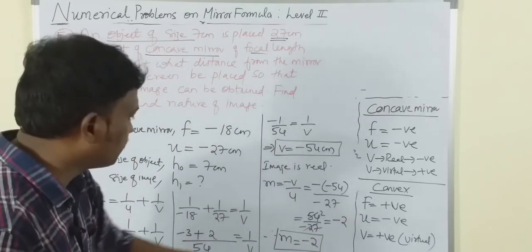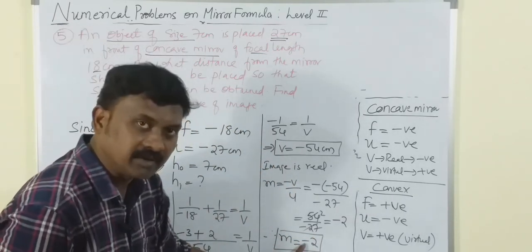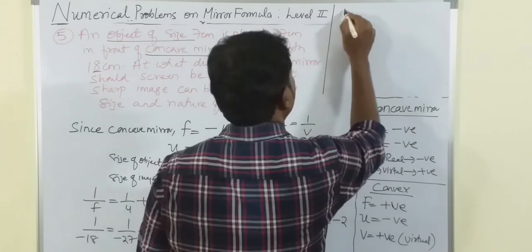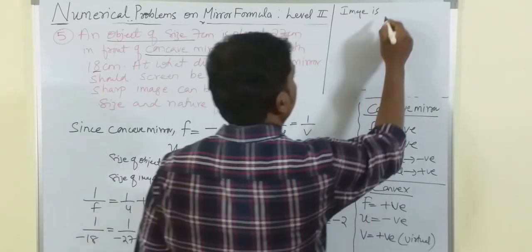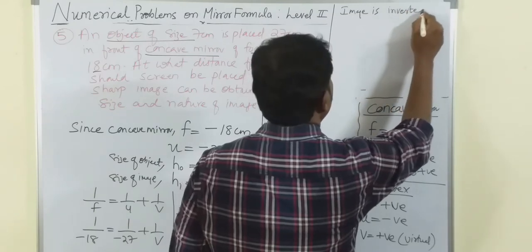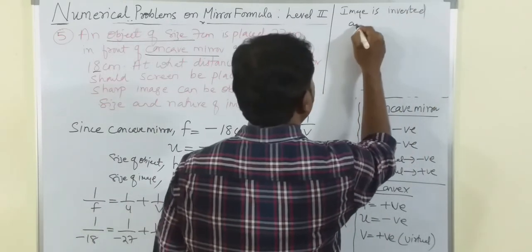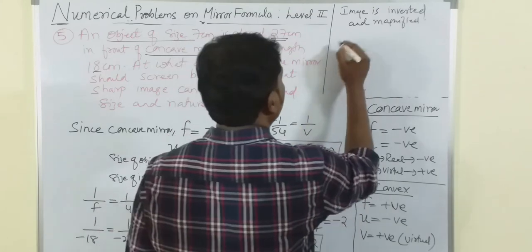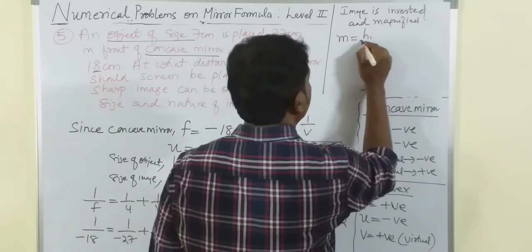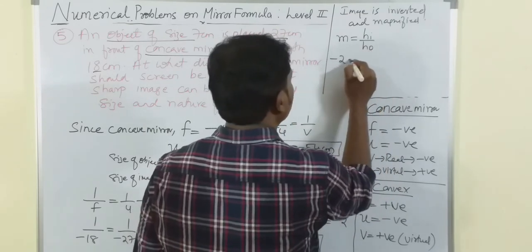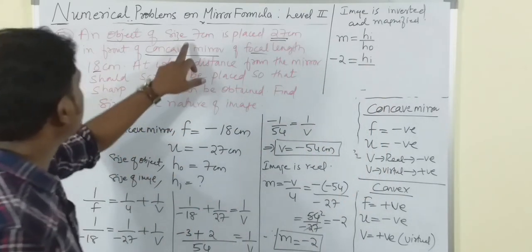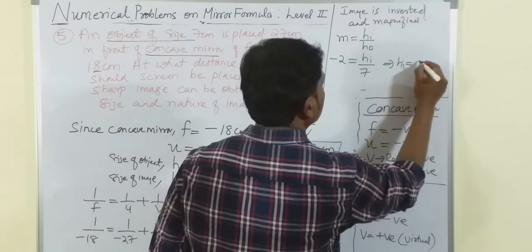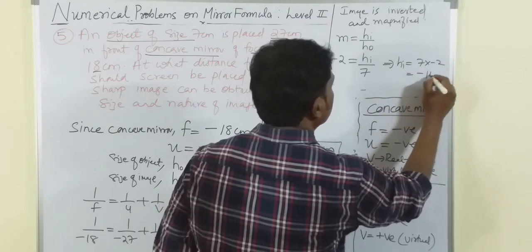Since m = -2: m is negative so the image is inverted; m = 2 is greater than 1 so the image is magnified. For the size of the image: m = h_i/h_o, so -2 = h_i/7, giving h_i = 7 × (-2) = -14 centimeters.